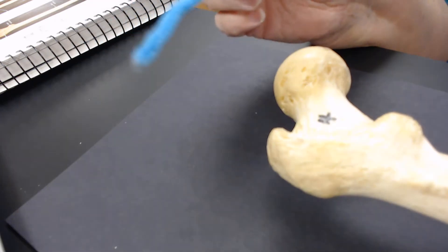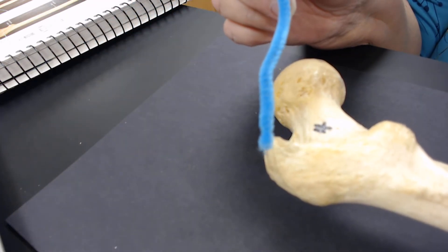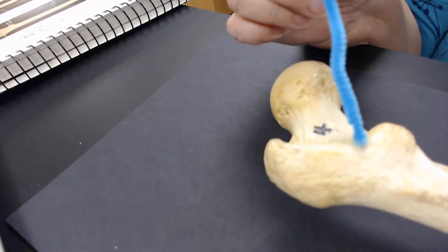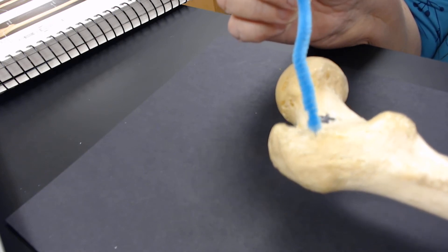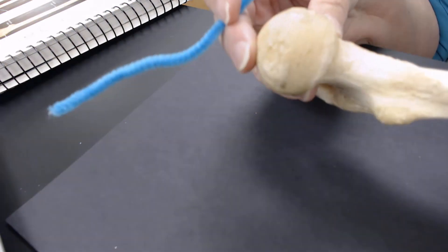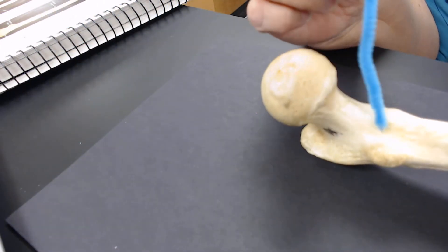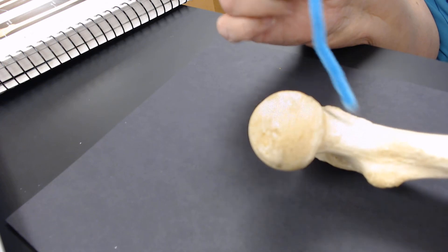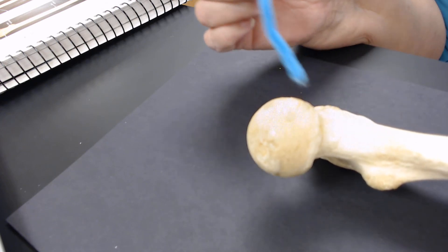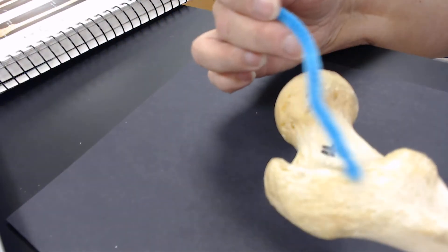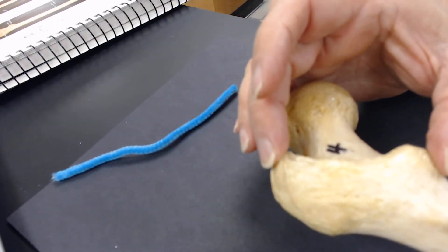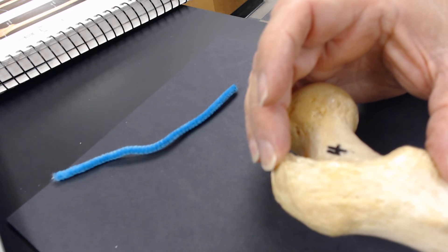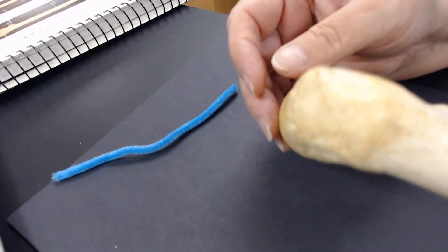All right. We have the intertrochanter crest. On this side, we have the intertrochanter line. This is a line. This one's a crest because it's raised. So, these are for attachment points of muscles. This is the head that fits in the acetabulum.